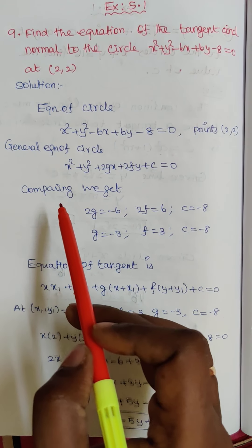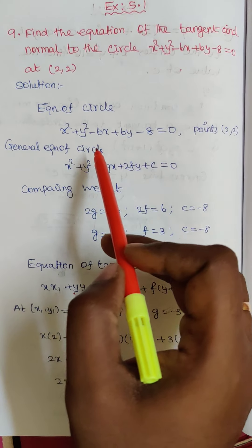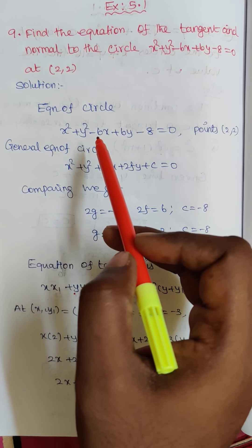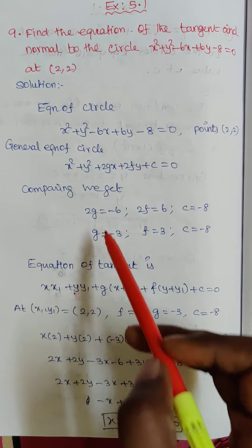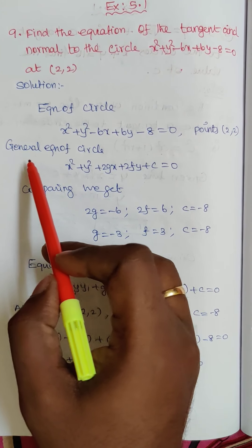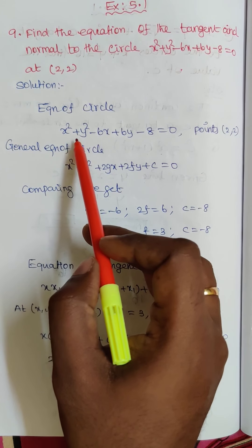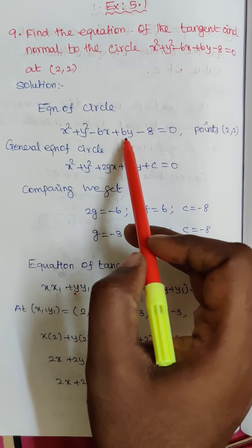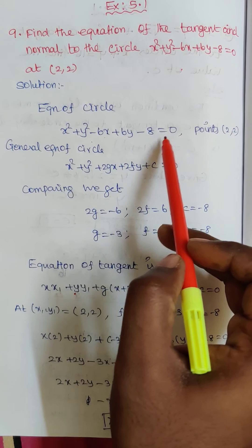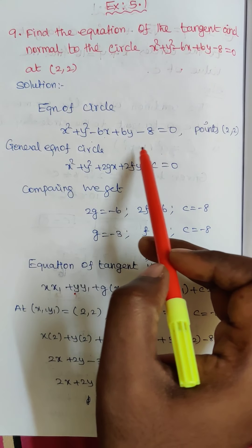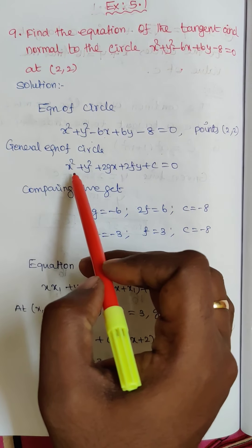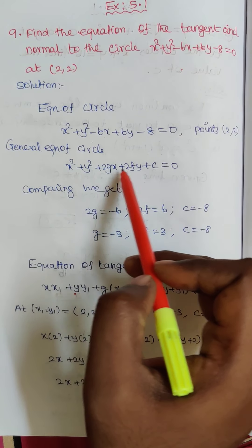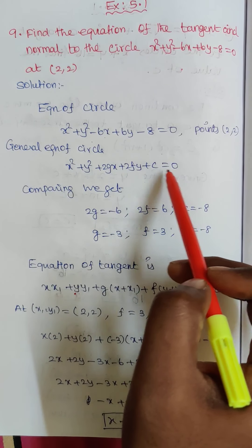The point is given and the equation of the circle is given, so we have to find out the equation of tangent and normal. The given circle is x squared plus y squared minus 6x plus 6y minus 8 equal to 0. The general equation of circle is x squared plus y squared plus 2gx plus 2fy plus c equal to 0.